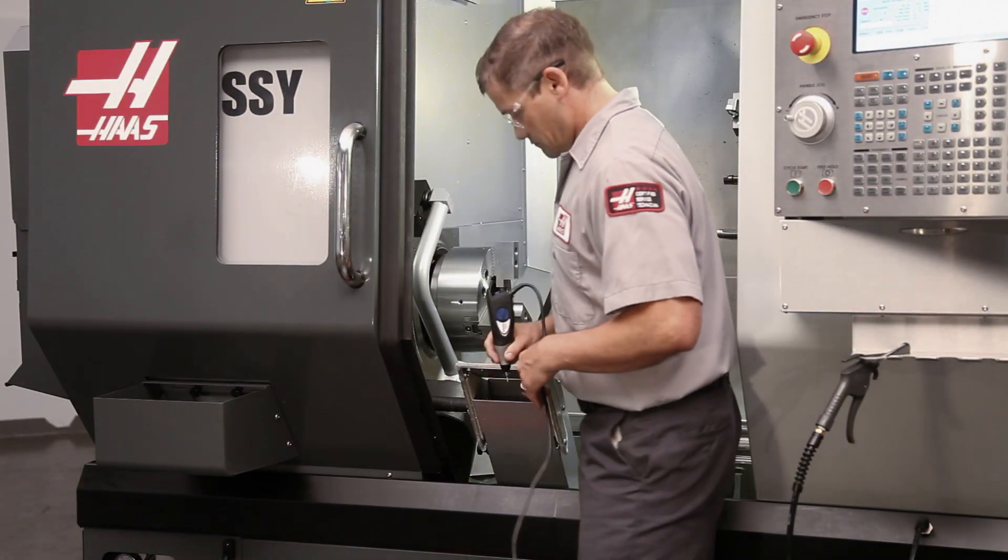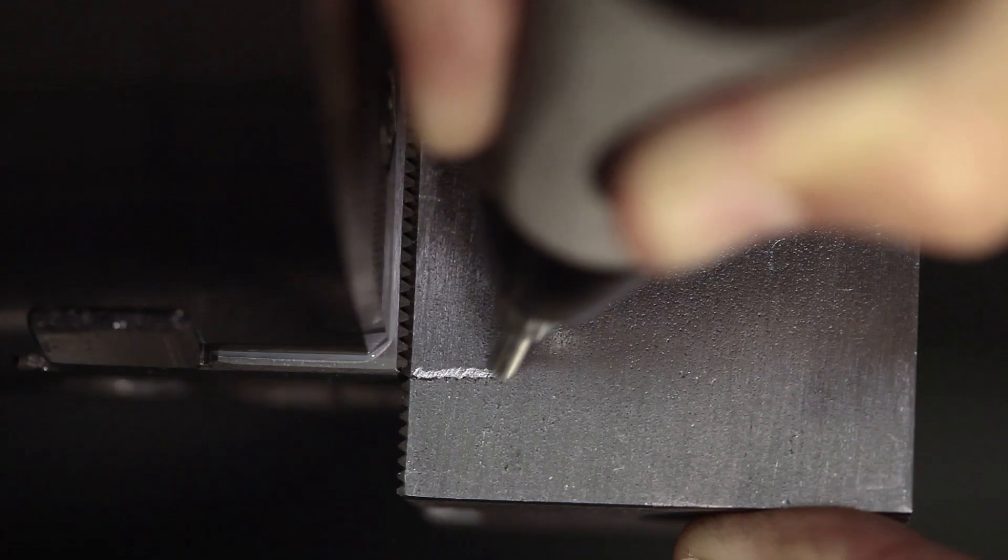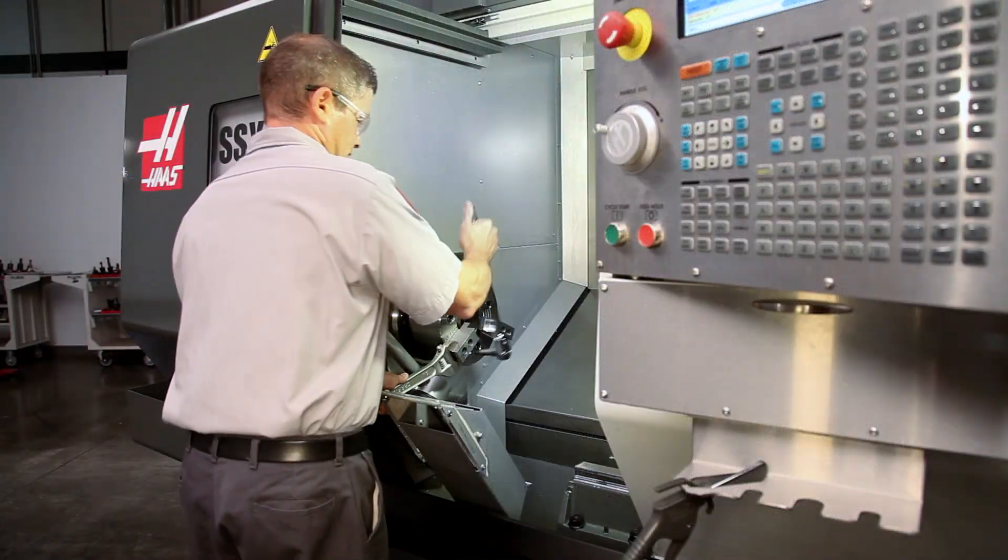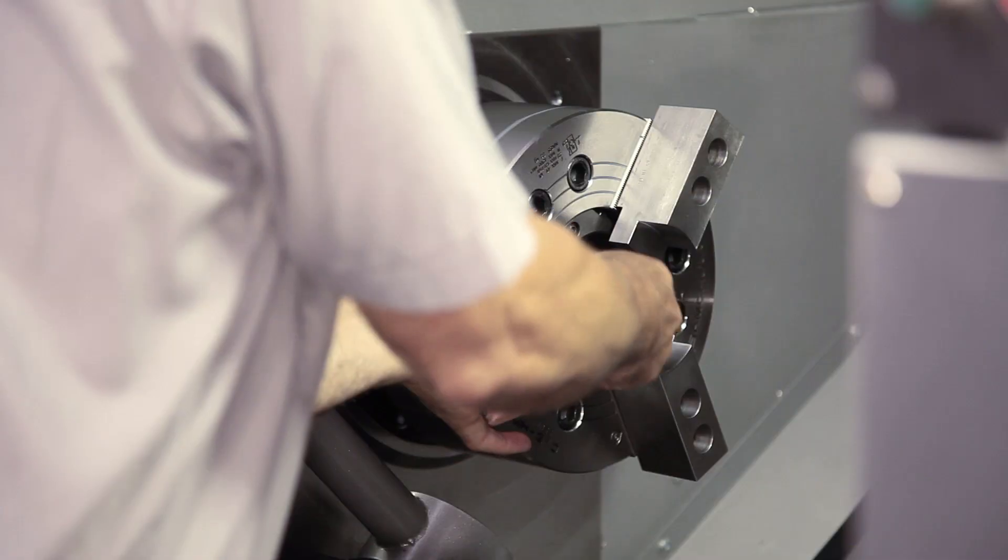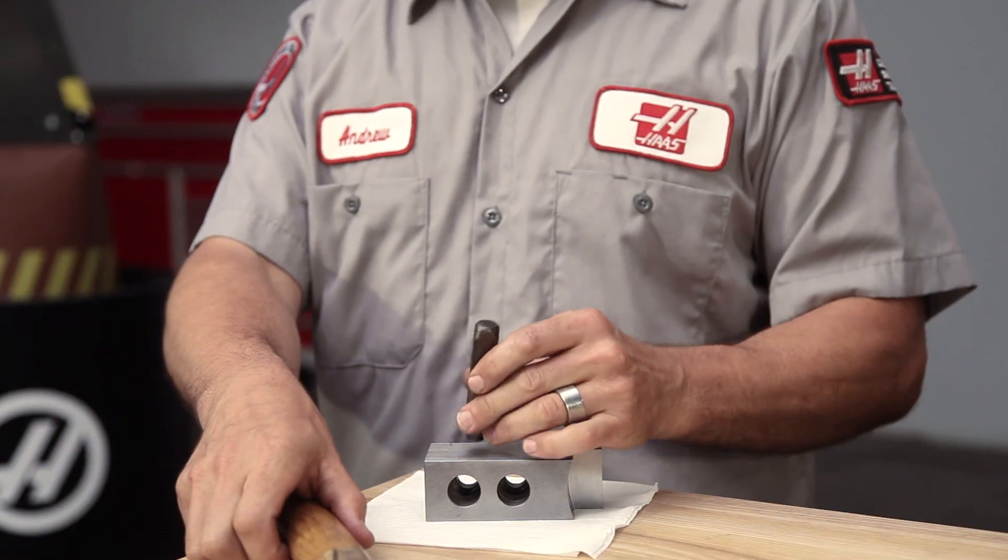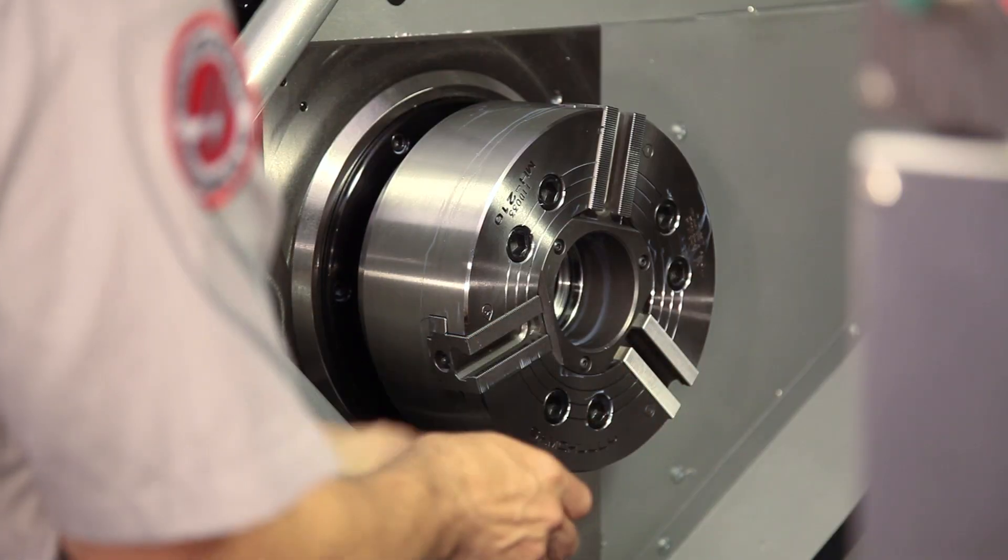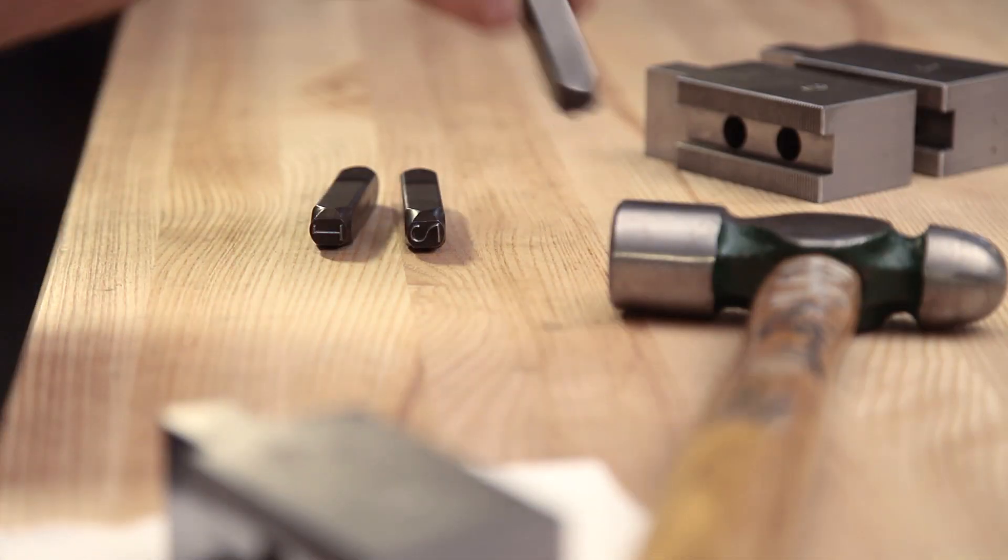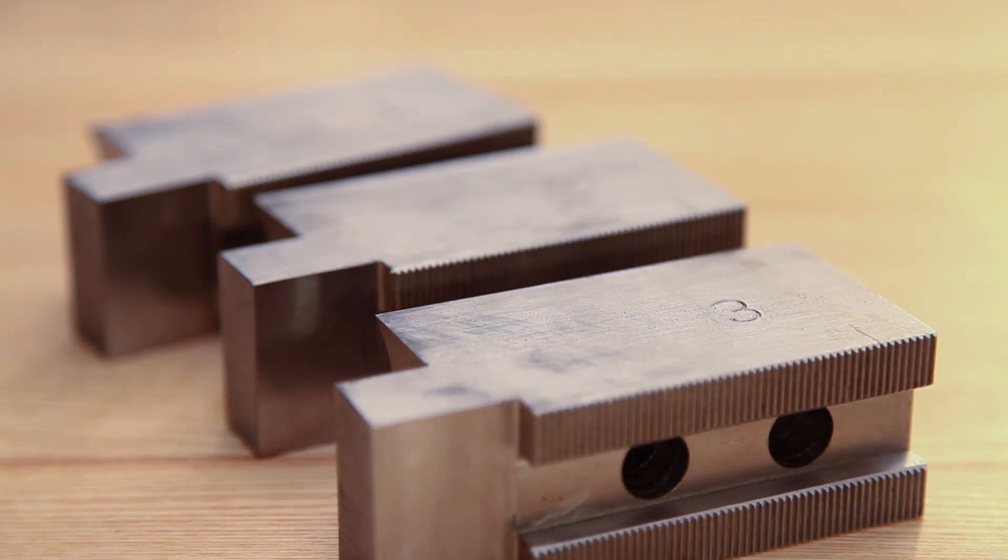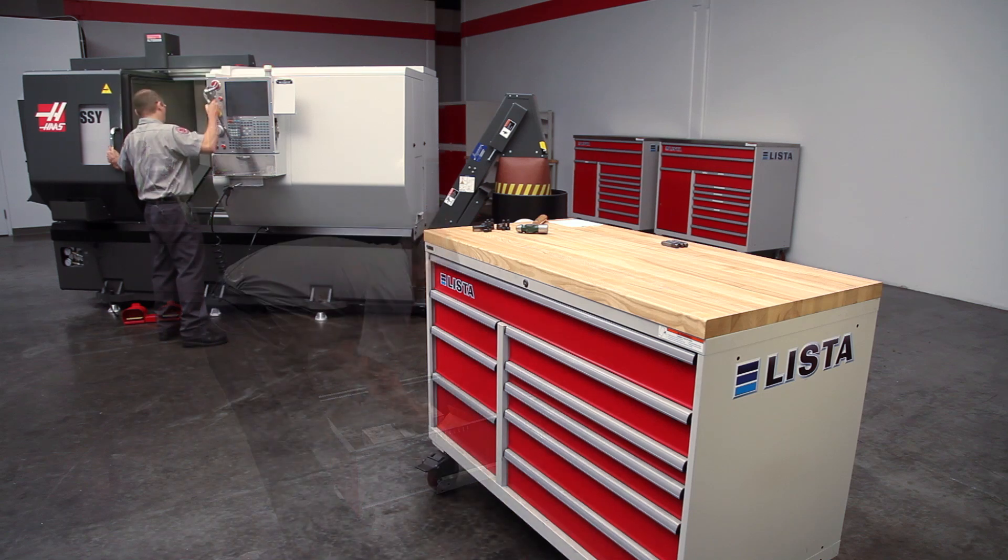Before disassembly, he finds a mark or feature on the master jaw and inscribes a line on the soft jaws to locate them at this exact tooth position in the future. Then, as he removes each jaw, he numbers it to match the number of the corresponding master jaw on the chuck. In this way, concentricity will be maintained without cutting the jaws again. Andrew packs his jaws away and powers down the machine.